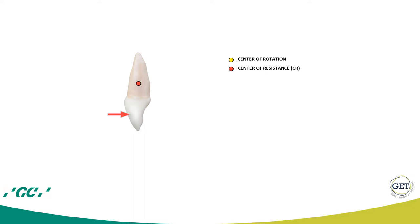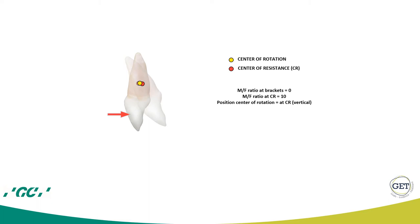We can also try to quantify this. Let's say we have an incisor and we apply at the level of the center of the crown a force of one gram — very little, but useful for calculation. There is a distance of about 10 mm from the center of the crown to the center of resistance. At the level of the crown, the moment-to-force ratio is zero because we apply only force and no moment. At the level of the center of resistance, the moment-to-force ratio will equal 10 — because we have a moment of one gram times 10 mm, divided by the force of one gram.